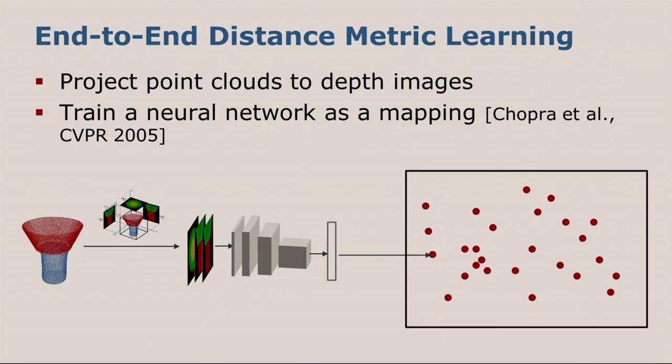How can we do this? We want to do this end-to-end, so we take the point clouds of the object as input, and to reduce the dimensionality, we project them to three orthogonal planes to obtain depth images, which we then feed into a neural network which computes our embedding.